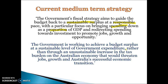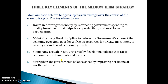They don't want to be too contractionary in the short term because they know that would threaten jobs and growth. So they're willing to take their time to get back to surplus and repair the budget, transitioning back to surpluses without undermining their goals of strong and sustainable growth and full employment. The key element of this medium-term strategy is to achieve budget surpluses on average over the course of the economic cycle.